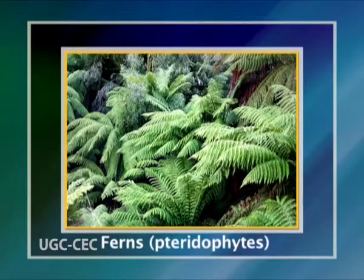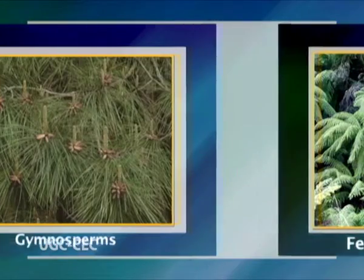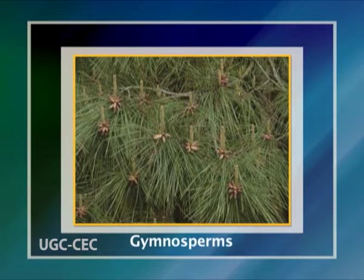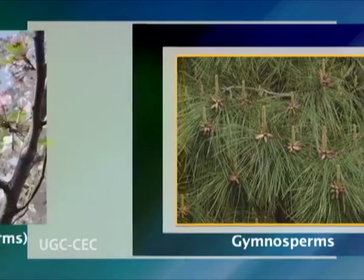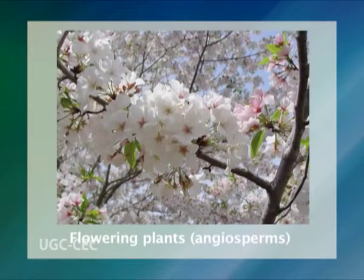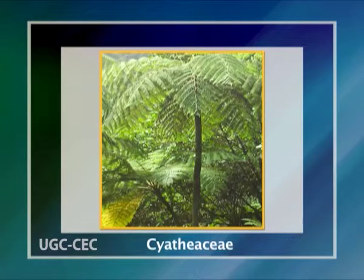The range of trees found in different plant groups includes ferns — the pteridophytes — conifers and their allies — the gymnosperms — and flowering plants, the angiosperms. Tree ferns fall in the family Cyatheaceae, which are rarely branched, possessing no true bark though having a trunk with woody strands. These tree ferns generally occur in frost-free shady habitats.